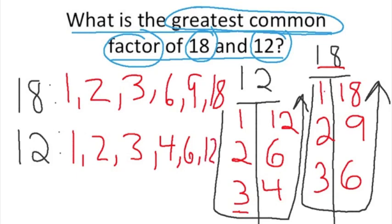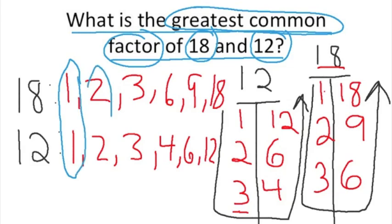Now we need to find the greatest common factor. Common means the factors that these two numbers share, and greatest refers to the biggest number. If we compare the factors of 18 and 12 vertically, we can see that they both share the factor of 1, the factor of 2, the factor of 3, and the factor of 6.